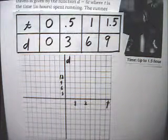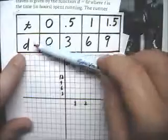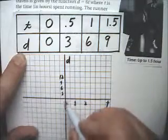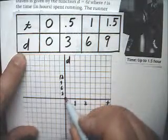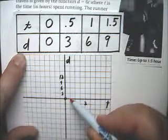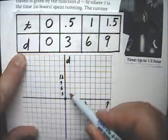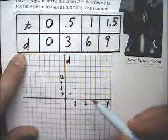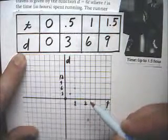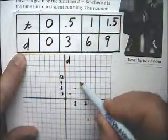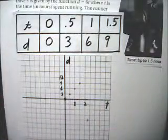So we have the point 0, 0, we have the point 0.5, which is right there on my graph, comma 3, 1 comma 6, and 1.5 comma 9. So that's my graph.